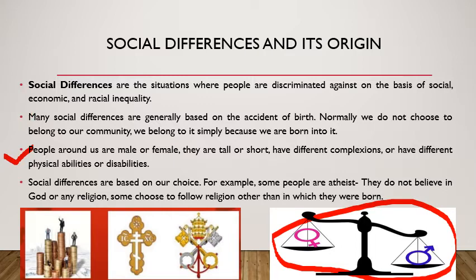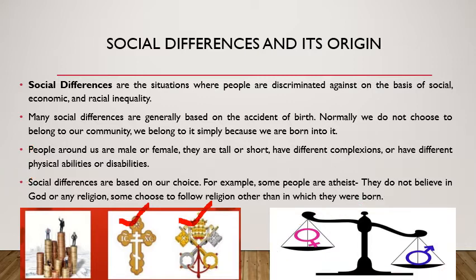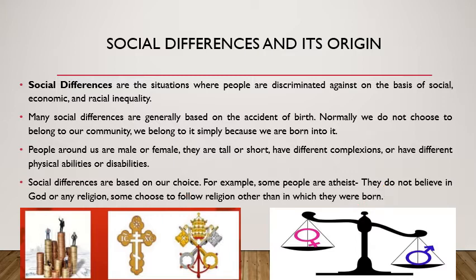Social differences are also based on our choices. For example, some people are atheists — they do not believe in God or any religion. Some choose to follow a religion other than the one in which they were born. Social differences are created by society and the people living in it, depending upon birth, belief, and norms set by the society. Social differences are not made by God; it is the choice of the people living in society to see or make differences among themselves.